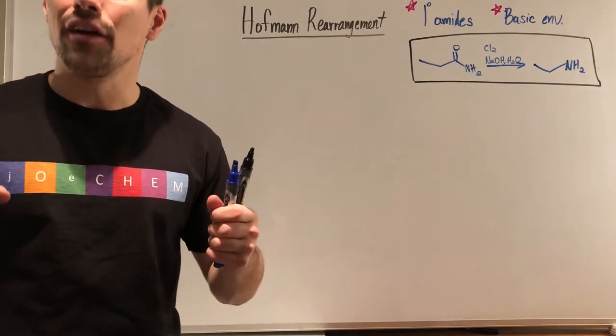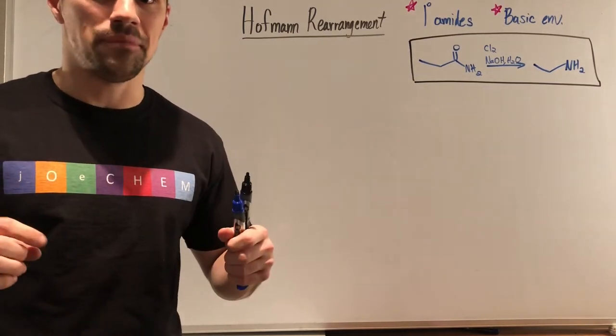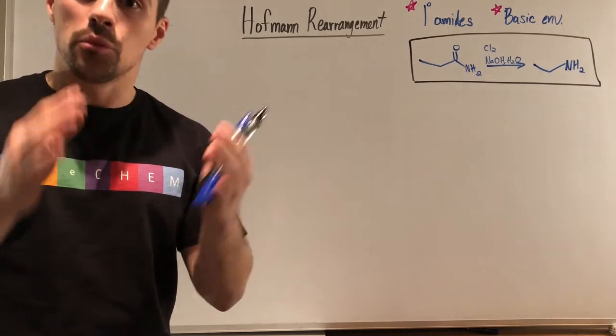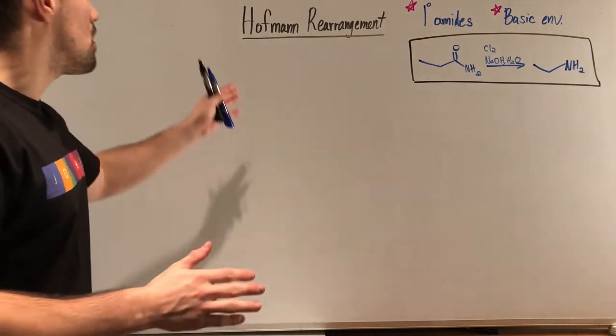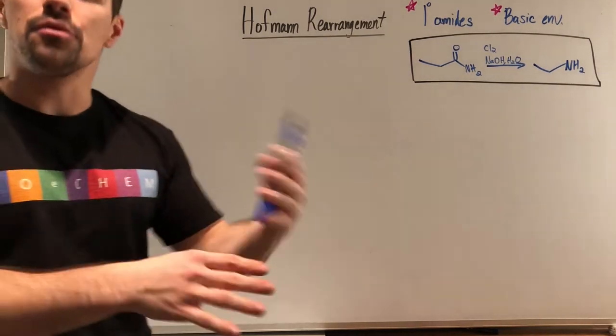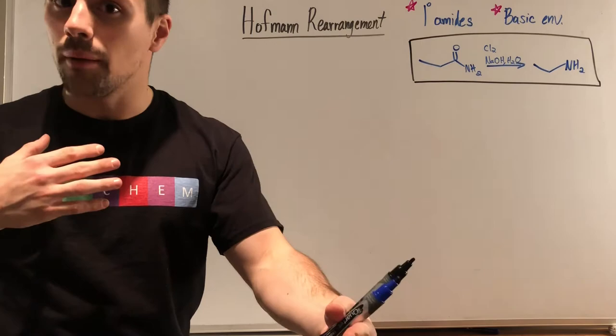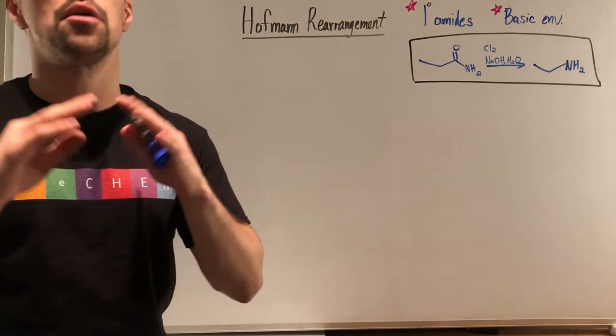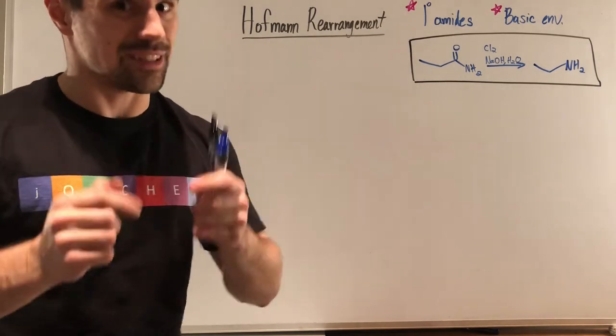Hey Joe Chemists, welcome back for another video here on Joe Chem. In this video we're gonna talk about some amide chemistry, more specifically a reaction called the Hofmann rearrangement. It's not that bad, we're gonna step through the mechanism, we'll do an example problem, and I think you'll find that it's very straightforward and luckily pretty simple.